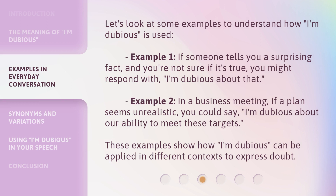Let's look at some examples to understand how 'I'm dubious' is used. Example 1: if someone tells you a surprising fact and you're not sure if it's true, you might respond with 'I'm dubious about that.' Example 2: in a business meeting, if a plan seems unrealistic, you could say 'I'm dubious about our ability to meet these targets.' These examples show how 'I'm dubious' can be applied in different contexts to express doubt.